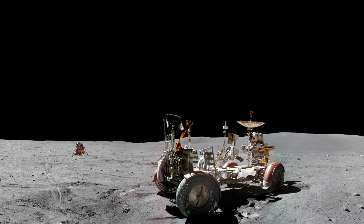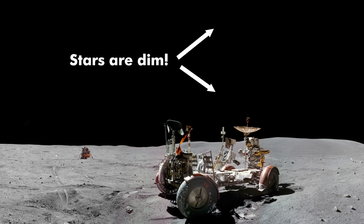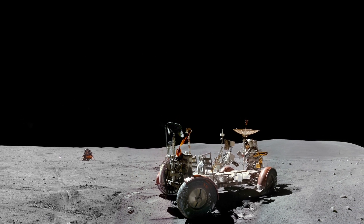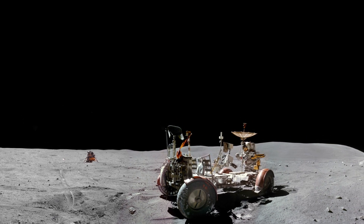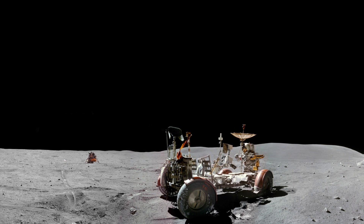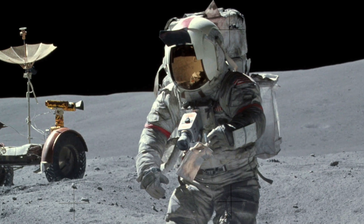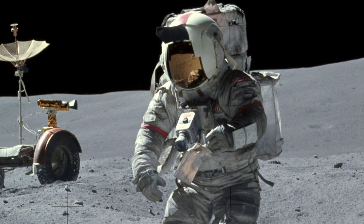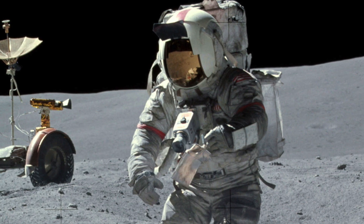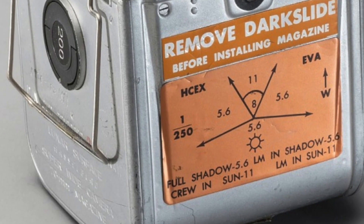Stars are very dim, but the lunar surface was very bright. All of the photos captured on the lunar surface were taken with a camera mounted on the astronaut's chest, at a shutter speed of 1/250th of a second.